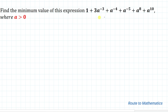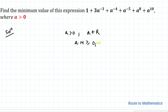We are asked to find the minimum value of this given expression, and it is given that a is greater than 0. That means a must be a positive real number. So in the next step, let's apply the AM-GM inequality — that is, arithmetic mean must be greater than or equal to geometric mean.